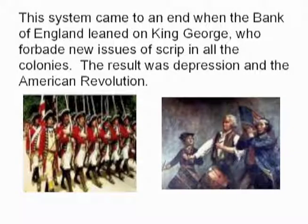During the time they did that, prices did not inflate. They paid no taxes and had no government debt — it was a totally sustainable, brilliant system. What ended it was not internal collapse but invasion from outside: King George simply forbade them to do it. That caused a depression because it shrank the money supply. The colonists went on printing their money anyway — that was considered an act of rebellion and was one of the causes of the American Revolution.